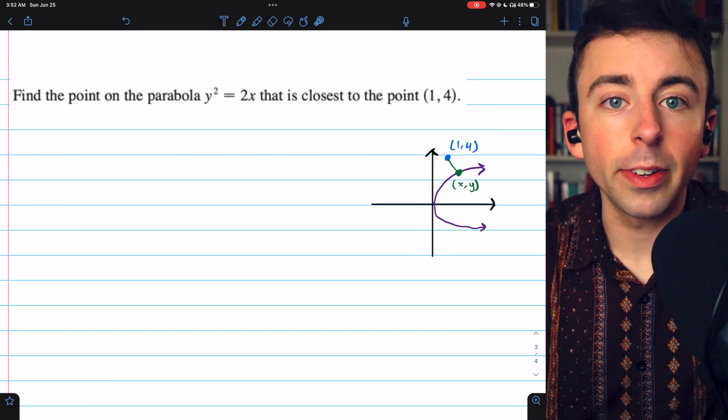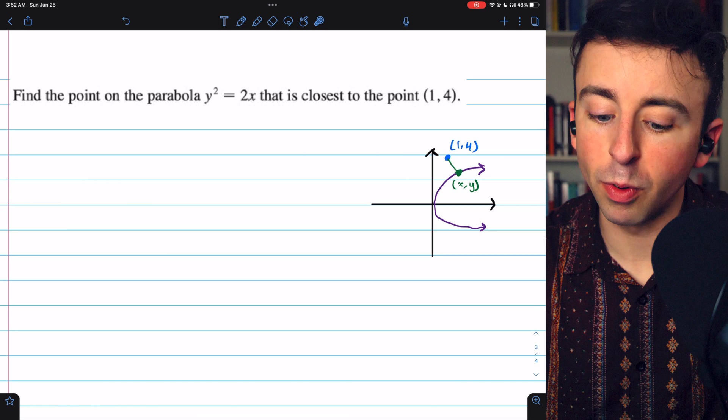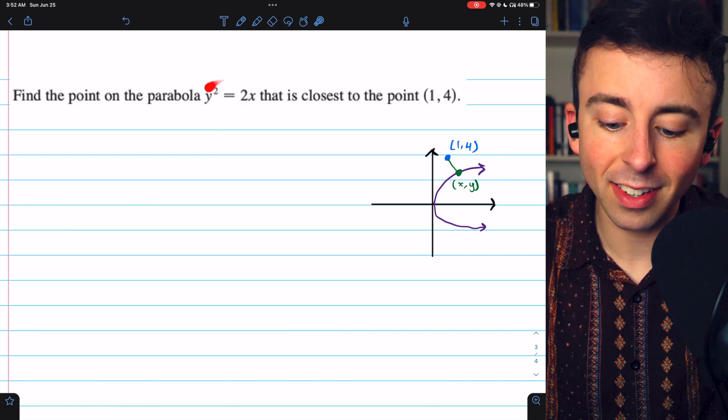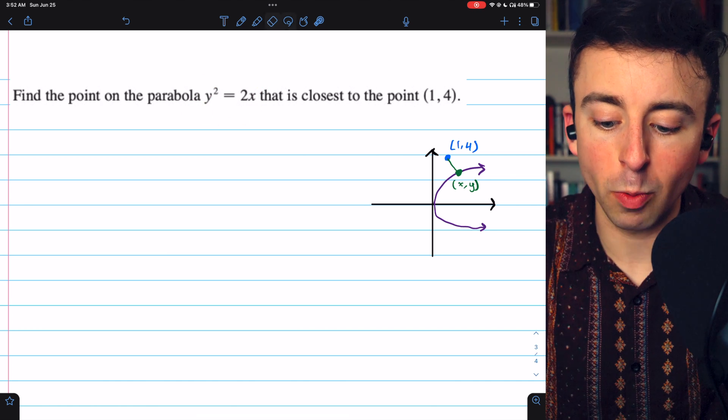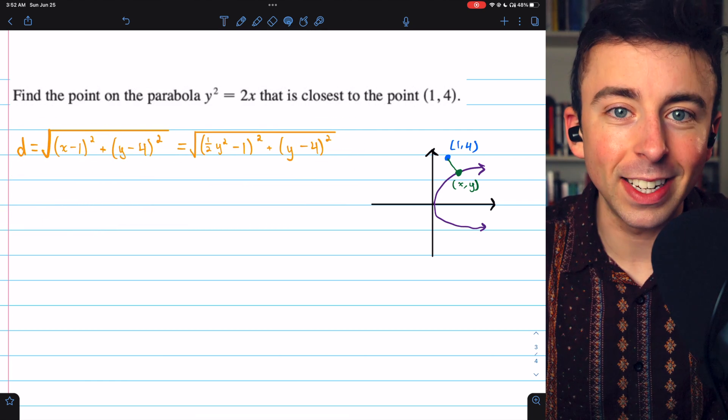We'd also want to write our secondary equation if there was one. There is one, but it's already written for us: y squared equals 2x. That relates x and y and that's going to come in handy for writing our primary equation, which is the equation for distance.